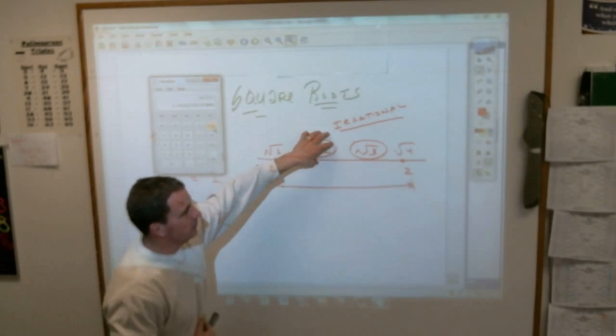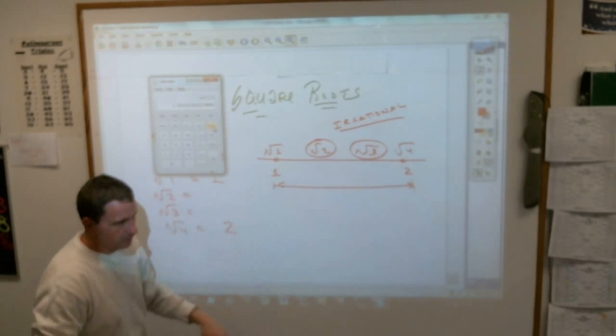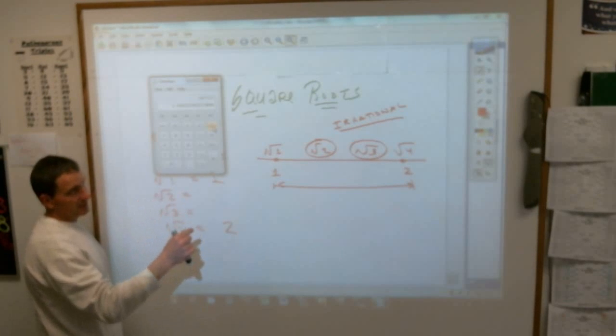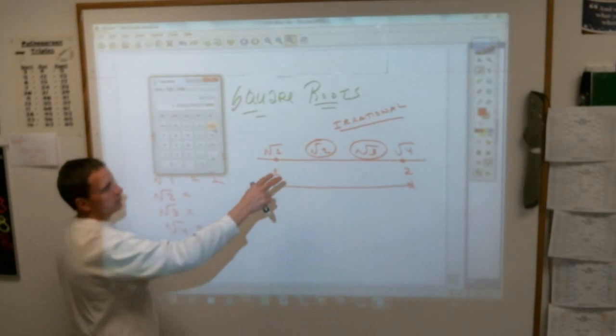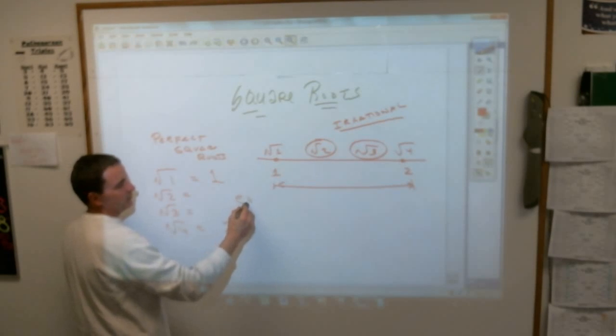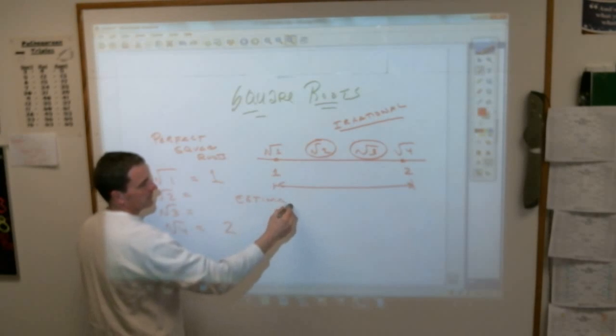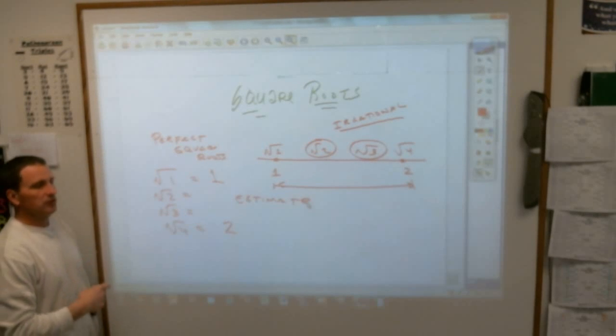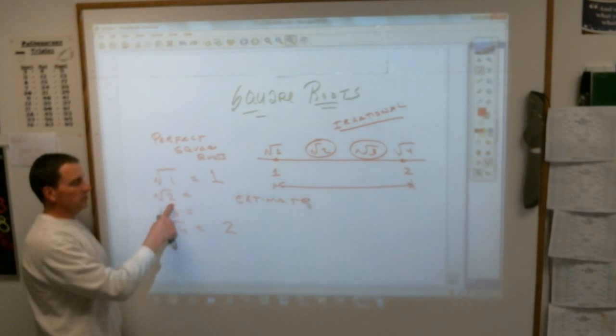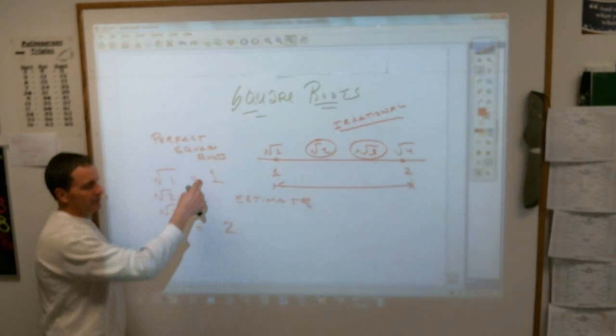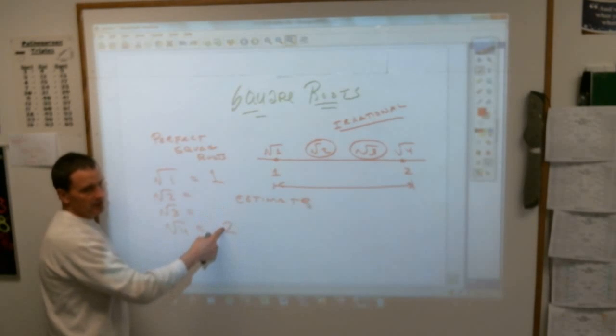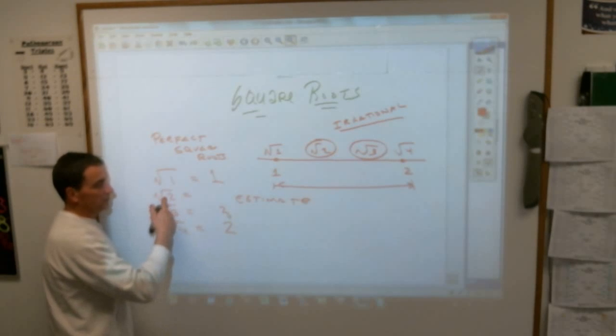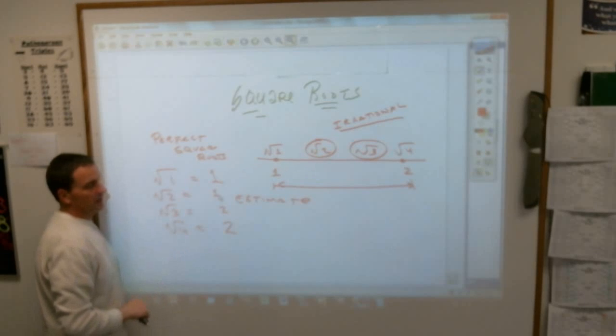So this square root of 2 and the square root of 3 are irrational. They don't work out perfectly. But, and that's what today's lesson is about, when you come up with square roots that don't work out, you should be able to estimate what they are. You know that the square root of 2 and the square root of 3 have to be between 1 and 2, so that's how you would estimate it.